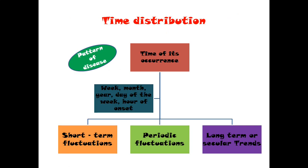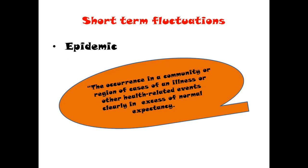Time distribution: diseases are classified under short-term fluctuation, periodic fluctuation, and long-term or secular trends. The patterns of disease are different in how they present in people. Under short-term fluctuation, if it is epidemic, a lot of cases appear suddenly overnight in a two or three day period, and then it goes just like that. That is epidemic — occurrence of an excess number of cases. Common cold and influenza are examples of short-term fluctuation with a very shorter duration.